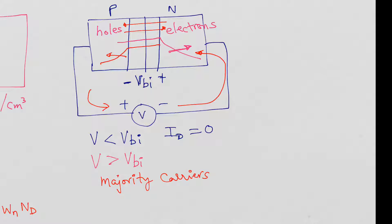If you plot this current with respect to voltage — voltage on the horizontal axis and current on the vertical — initially, until the voltage reaches VBI, there is very, very negligible current. Then it starts increasing exponentially. That is the diode current characteristic in forward bias.